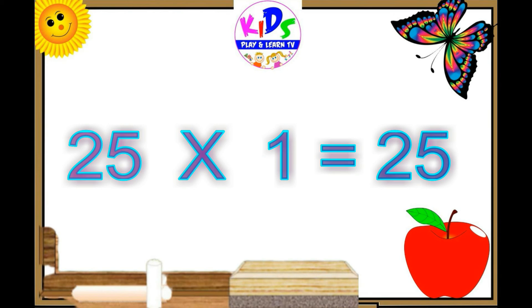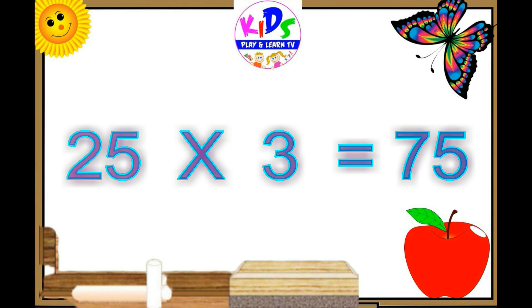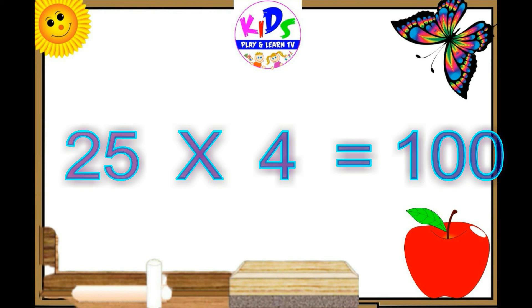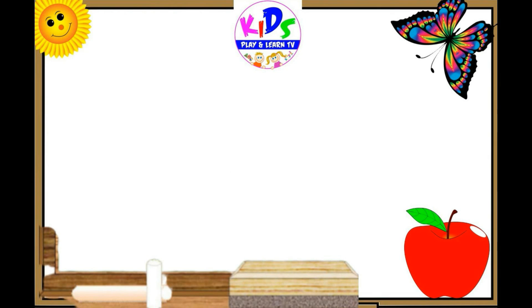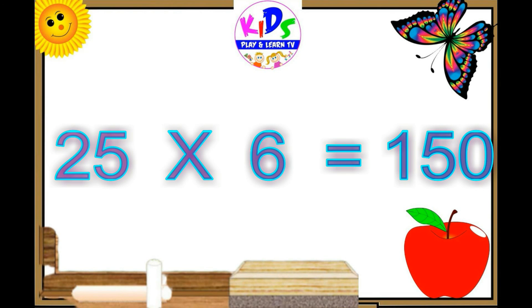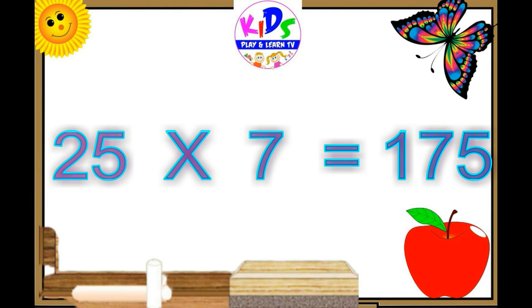25 ones are 25, 25 twos are 50, 25 threes are 75, 25 fours are 100, 25 fives are 125, 25 sixes are 150, 25 sevens are 175.